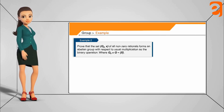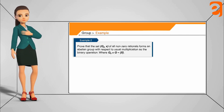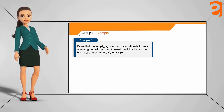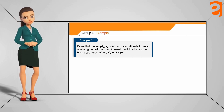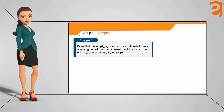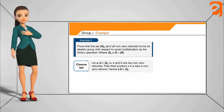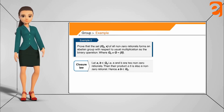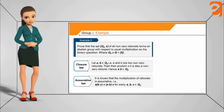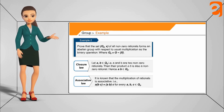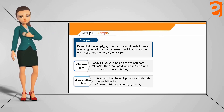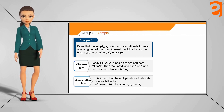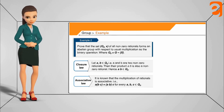Let's look at another example. Consider the set of non-zero rational numbers — all rational numbers except zero — with the binary operation of multiplication. We will check whether this set forms an abelian group by verifying all five properties. Closure: multiplying two non-zero rational numbers always gives a non-zero rational number, so closure holds. Associativity: multiplication is always associative for non-zero rational numbers.